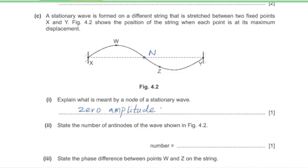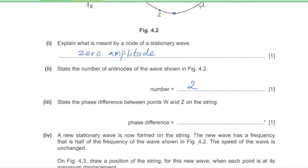Part 2: state the number of antinodes shown in figure 4.2. Antinodes are points of maximum amplitude. There are two antinodes on this string.